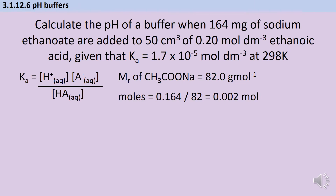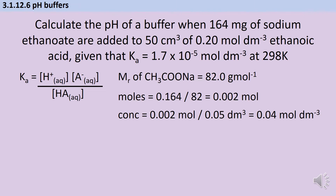In this first style of question, the total volume is going to be the volume of the acid, because I'm not adding any more liquid — I'm just taking my solid salt and putting it into the acid solution I already have. So to work out the concentration of the ethanoate ion, I divide the moles of sodium ethanoate by the volume of my acid. I also need to convert the volume from centimetres cubed into decimetres cubed.